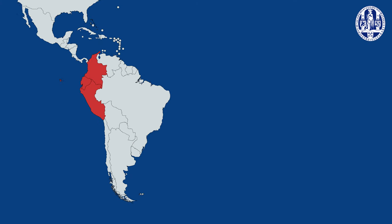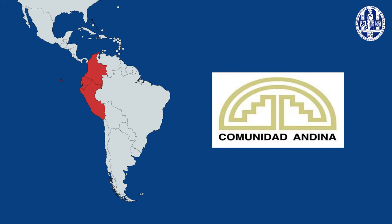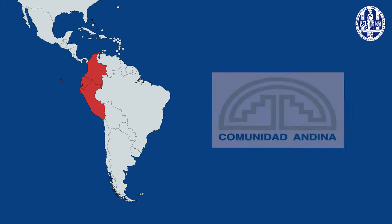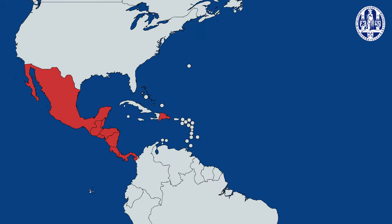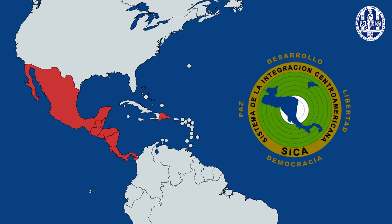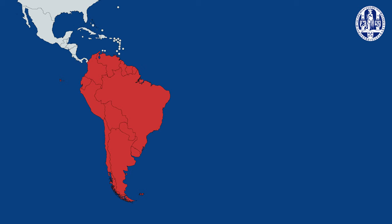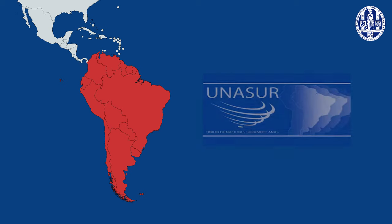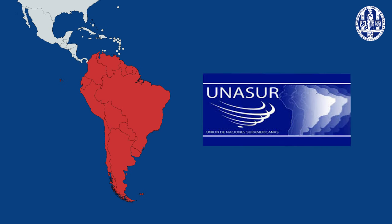This led to the creation of the Andean Confederation in the 19th century, which is a predecessor of today's Andean Community or CAN. It also led to the creation of the Federal Republic of Central America, which we now know as SICA. And finally it led to the creation of the United Provinces of South America, which is an early version of the current Union of South American States or UNASUR.